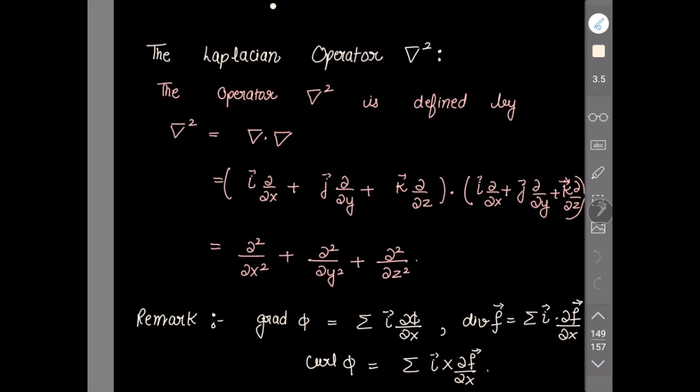Next is the Laplacian operator del square. The operator del square is defined as del dot del. That is the dot product of the del operator with itself. We know the del operator is written as i ∂/∂x + j ∂/∂y + k ∂/∂z, so its dot product with itself gives ∂²/∂x² + ∂²/∂y² + ∂²/∂z².